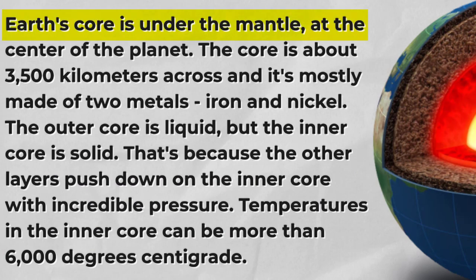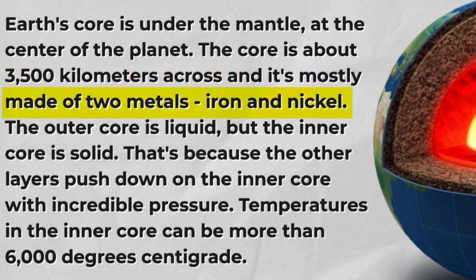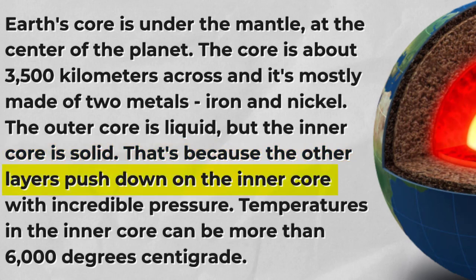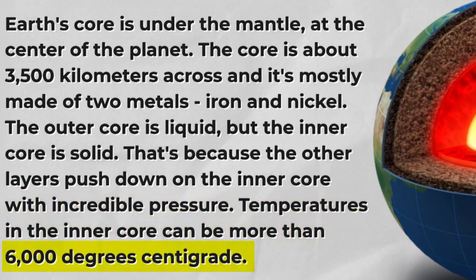Earth's core is under the mantle, at the center of the planet. The core is about 3,500 kilometers across, and it's mostly made of two metals: iron and nickel. The outer core is liquid, but the inner core is solid. That's because the other layers push down on the inner core with incredible pressure. Temperatures in the inner core can be more than 6,000 degrees centigrade.